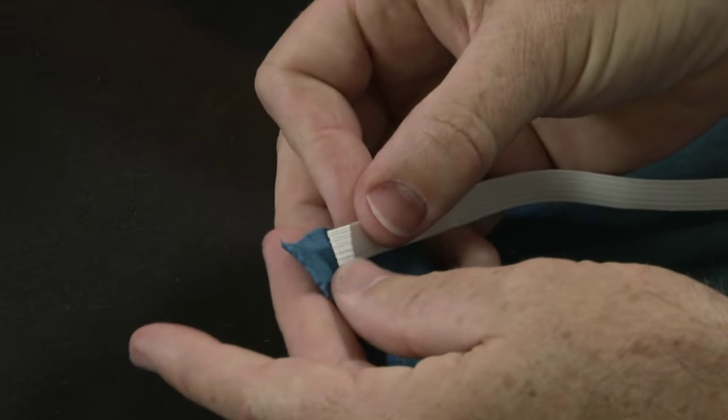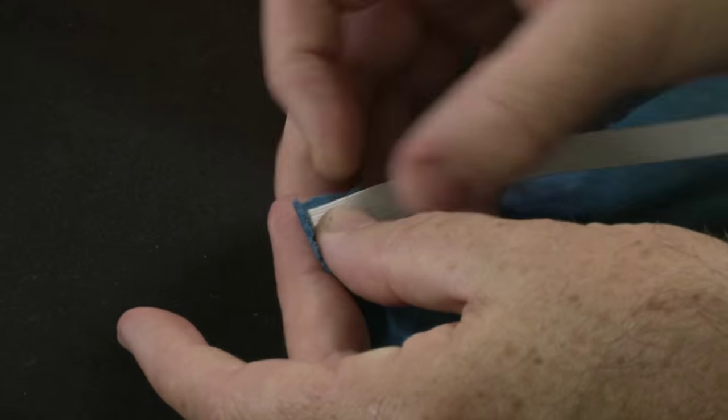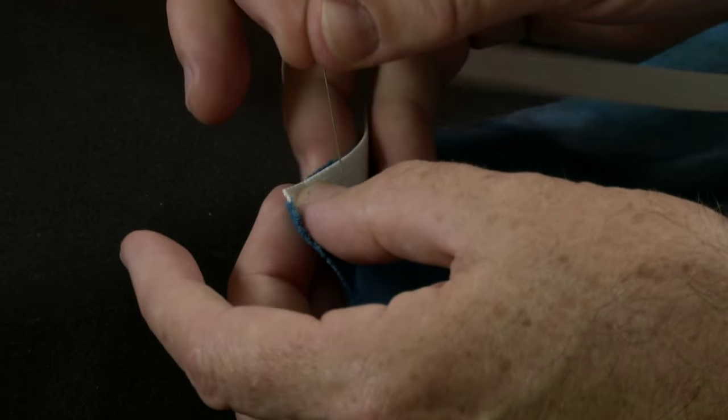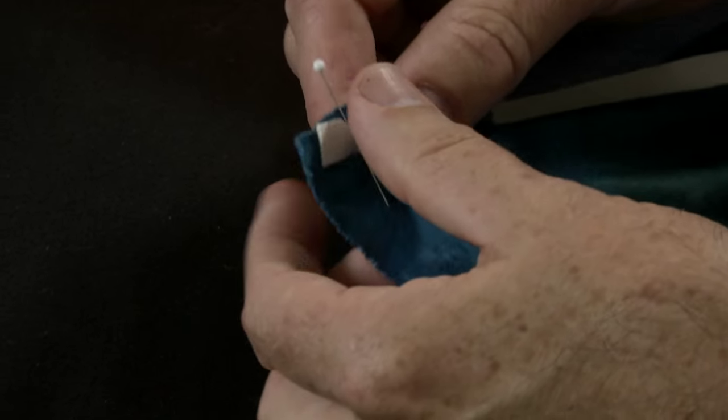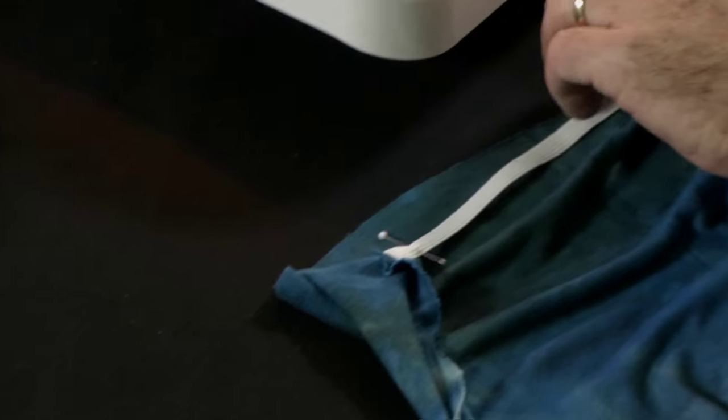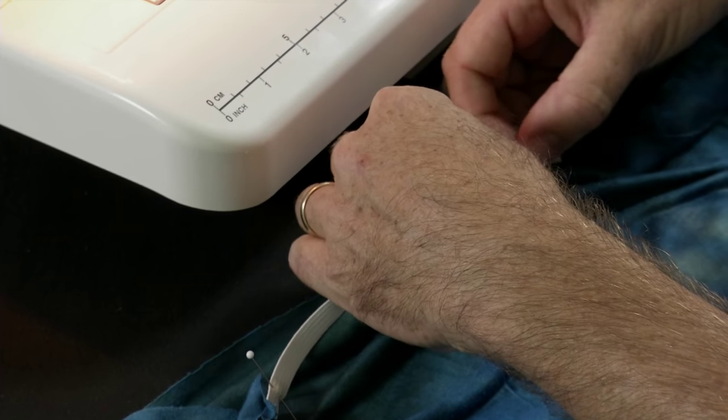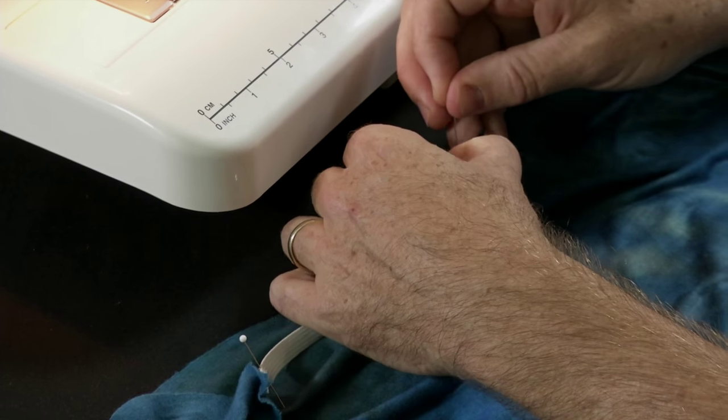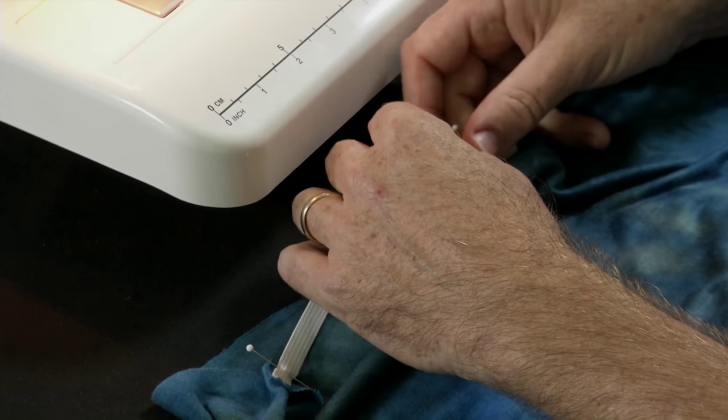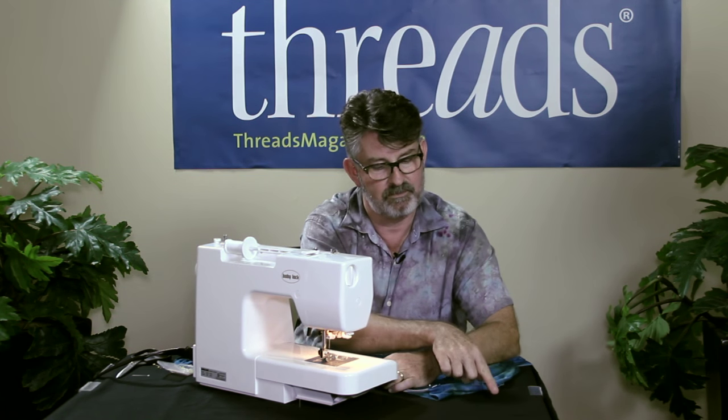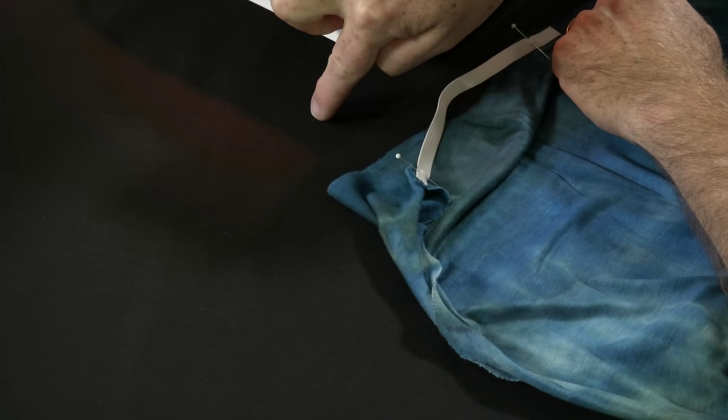We're going to just go ahead and pin this. Now the secret to this particular technique is not using too many pins. What we're going to do is pretend that we have a waist notch marked. You're going to divide your elastic into quarters and you're going to divide your garment into quarters, and then you're going to match the quarter marks around the circumference of your garment.